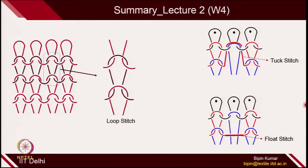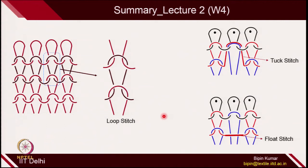You can create these stitches by playing with the cams in the cam jacket. In the case of tuck stitch, if you deactivate the clearing cam, the needle does not clear the old loop but can catch the new yarn - this is how you create tuck stitch. In the case of float stitch, you deactivate the rising cam, so it does not clear the old loop and also does not catch the new yarn. Tuck and float influence fabric structure, controlling shrinkage and width, determining fabric properties.